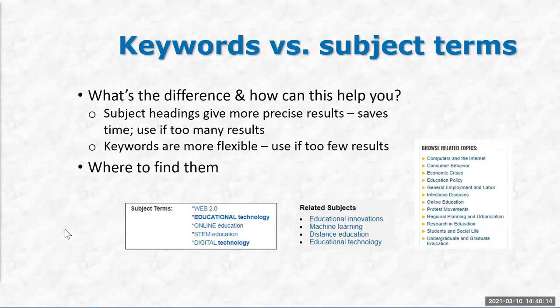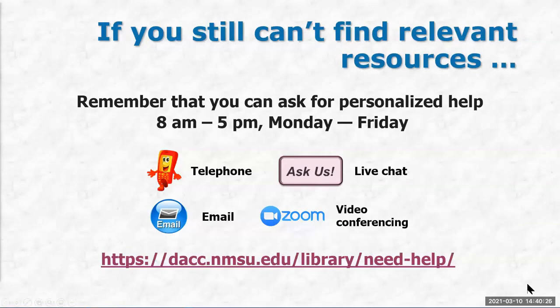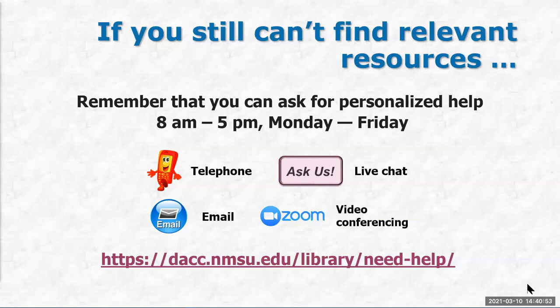You've done everything I've shown you so far but you're running into problems — what do you do? You can reach out to your instructor, who will hopefully say, 'Have you talked to the librarian yet?' This is our contact information. We are open Monday through Friday, 8 a.m. to 5 p.m., and you can reach us many different ways. If that schedule doesn't work because of your work or family life, send us an email and we can set up a time that works for you. We can do video conferencing, live chat, email, or telephone. We recommend video conferencing because then we can demonstrate exactly what needs to be done.